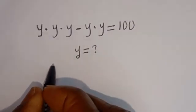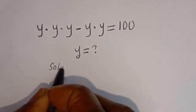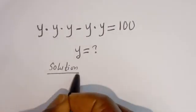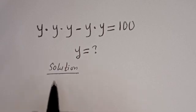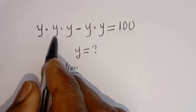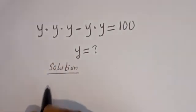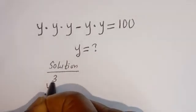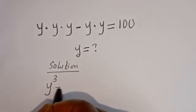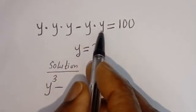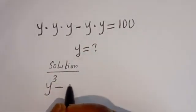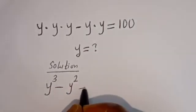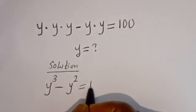Solution. Here we have Y multiplied by Y multiplied by Y — this is Y to the power of three — minus Y multiplied by Y, which is Y squared, is equal to 100.